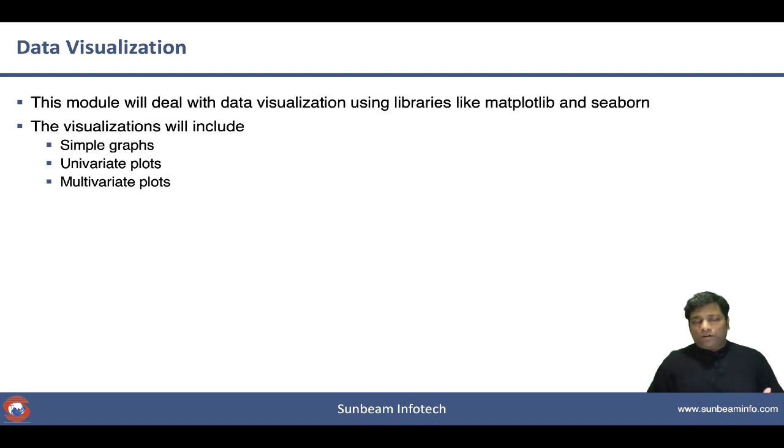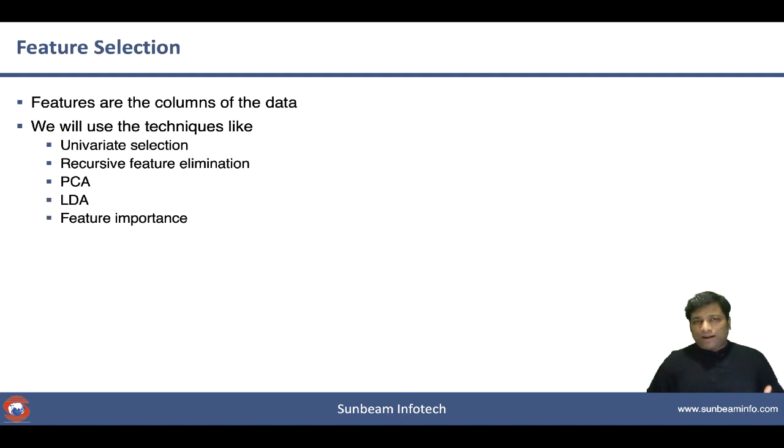Once the data visualization is over, once we understand the data, we'll start preparing the model. But we can't prepare the model unless we know the right selection of the columns. The columns are called as the features and we are going to select them by using different techniques. We can either select them manually by looking at the data, or we can use different techniques like PCA, LDA, feature importance, recursive feature elimination, and univariate selection.